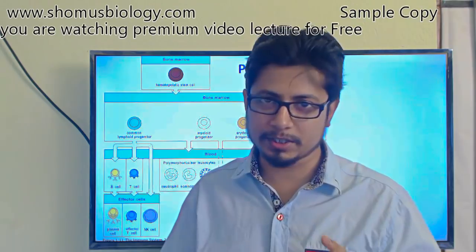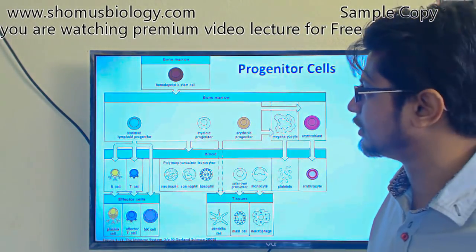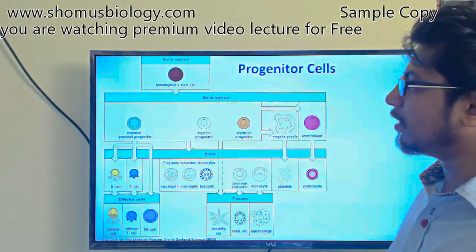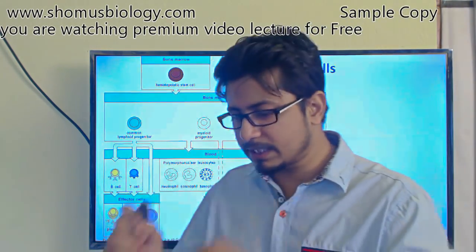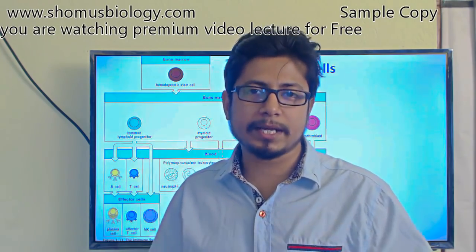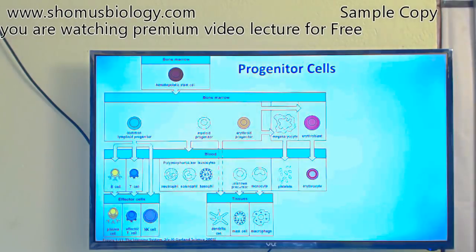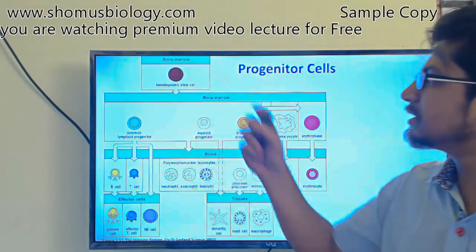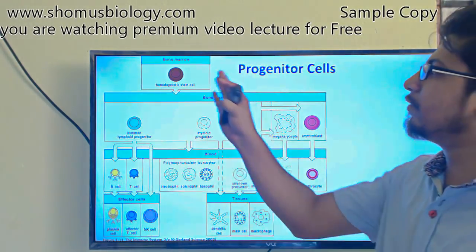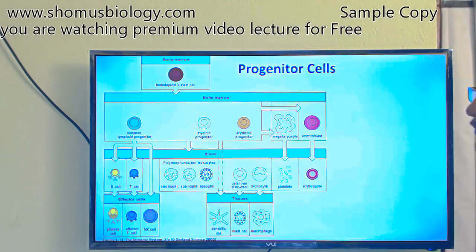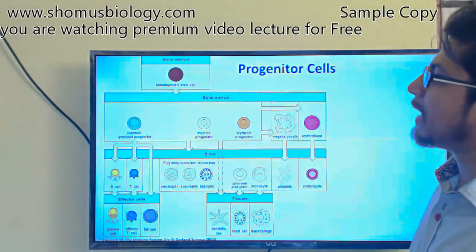All our body's blood cells have only one origin: the bone marrow. Bone marrow is the place where all blood cells originate. The cells present in bone marrow are known as hematopoietic stem cells. 'Hematopoiesis' means the production of all blood cells — red blood cells, white blood cells, everything. This is a kind of multipotent cell, meaning a stem cell that can produce many different varieties of cells on its own.